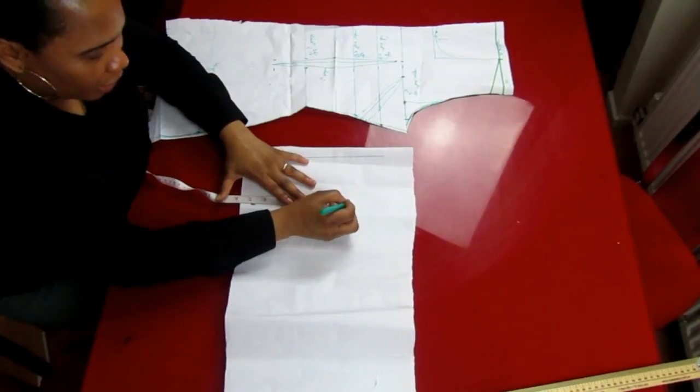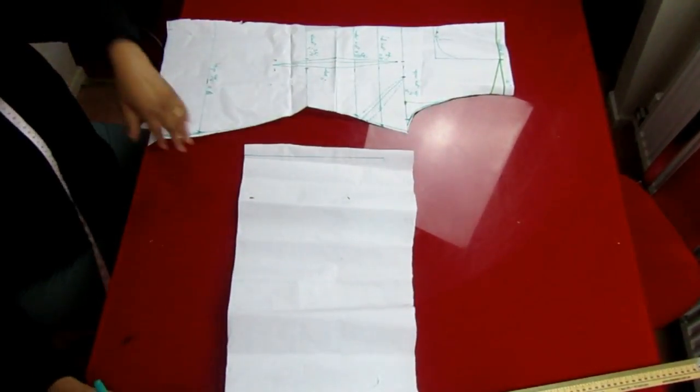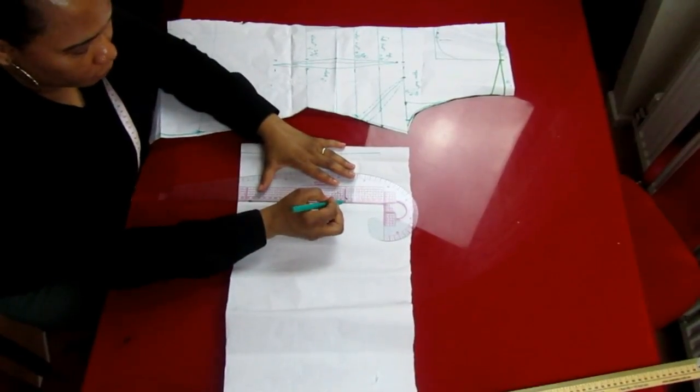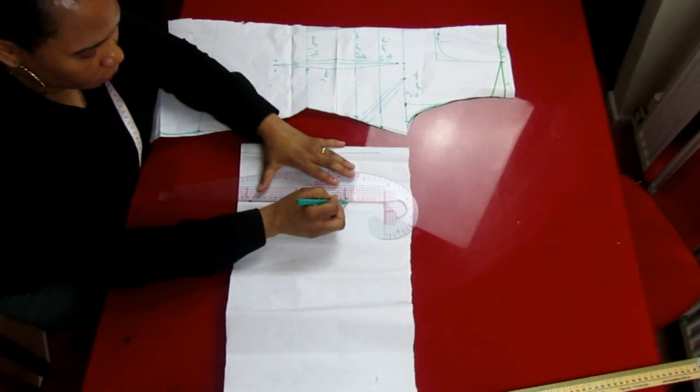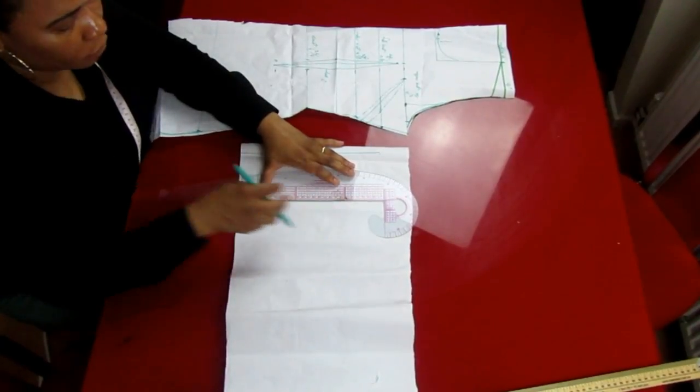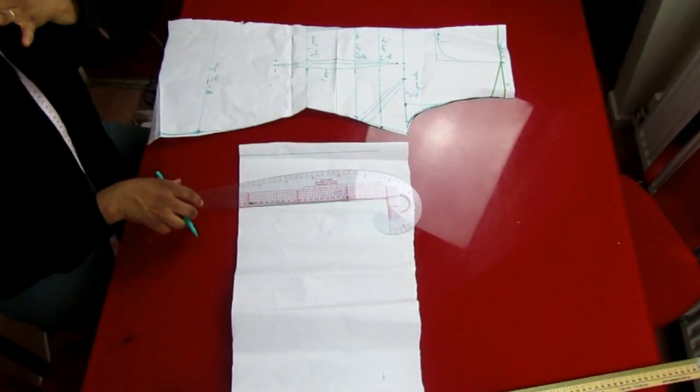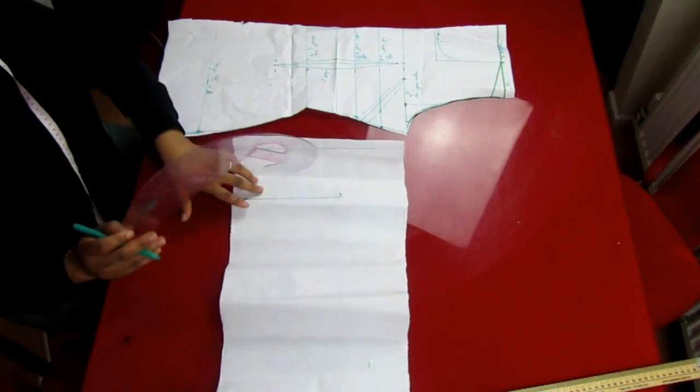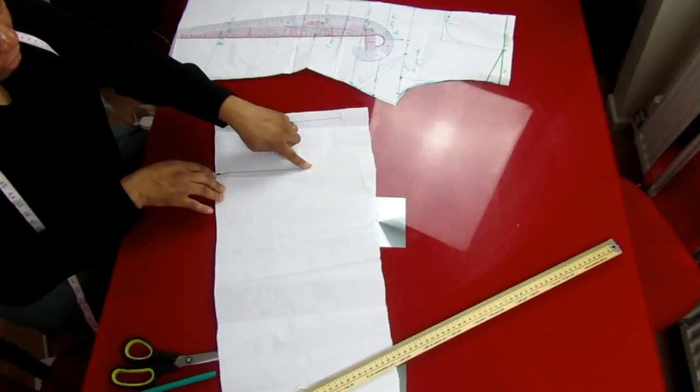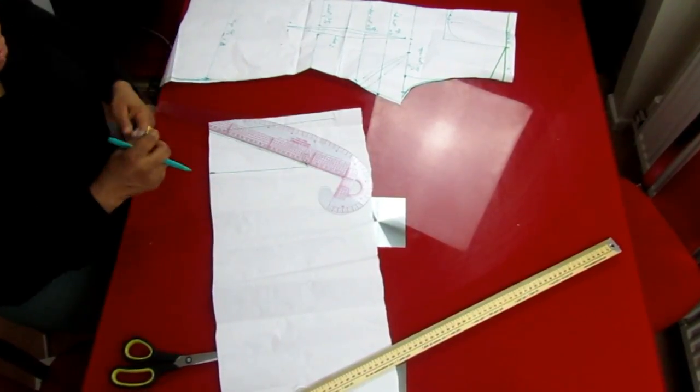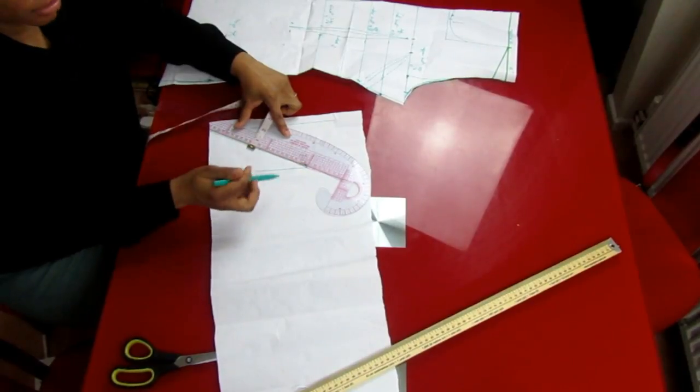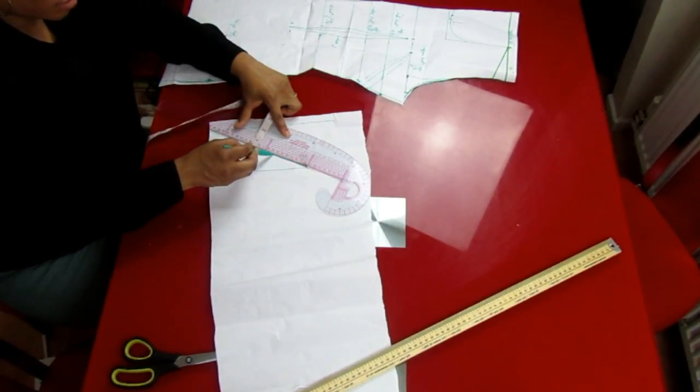So this is 7 and a half inches, then I draw a line and make my line here. So this is the 7 and a half inches I made. So this place you make a line across here. From here you draw your 7 inch line, you draw it like so.